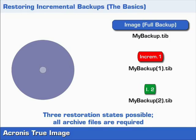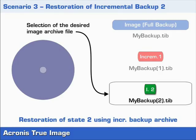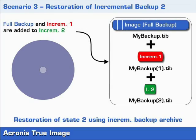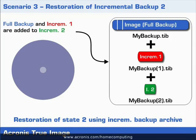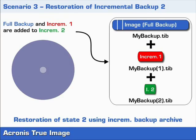We start with scenario 3, the most commonly used restoration situation, where you want to restore the most current version of the partition. In this case we will restore the partition to state 2. The program selects the most recent incremental archive file, which it then automatically combines with both older backups — the first incremental archive file followed by the full backup file. That means in order to restore the most up-to-date state of the partition, we require all of the backup archive files that have been made up to that point in time.